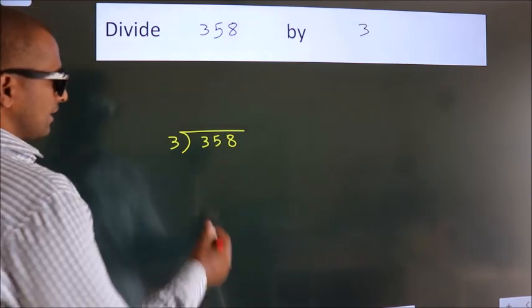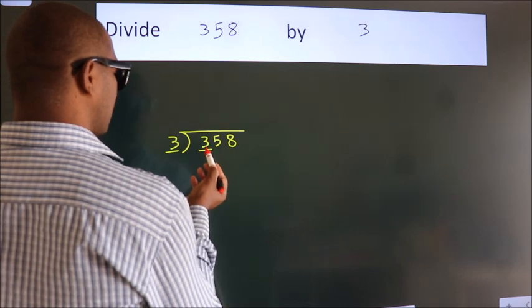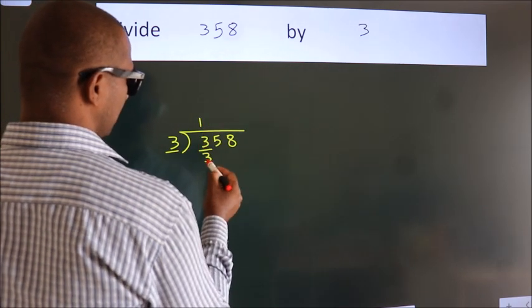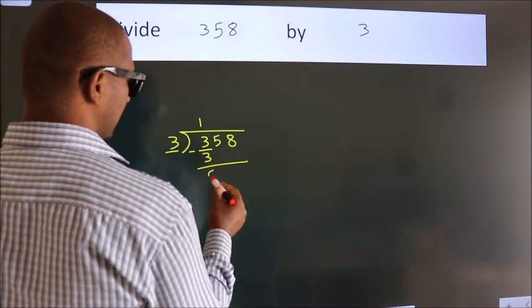Next, here we have 3, here 3. When do we get 3? 3 in the 3 table. 3 once, 3. Now we should subtract. We get 0.